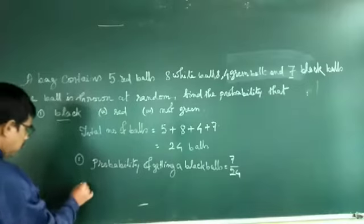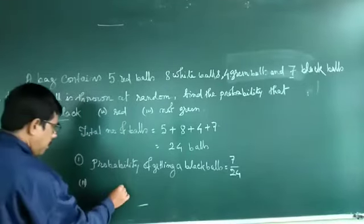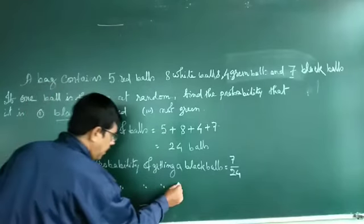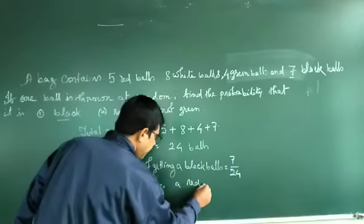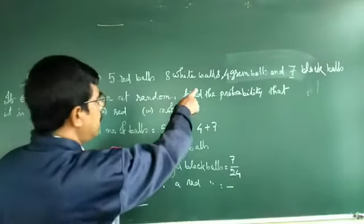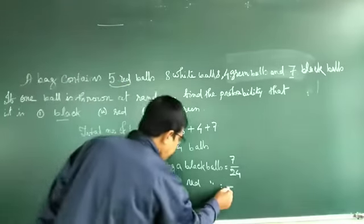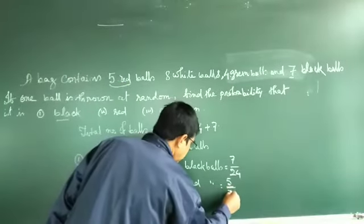Next is red. Find the probability of getting a red ball. How many red balls are there? Five red balls. So it will be 5/24.